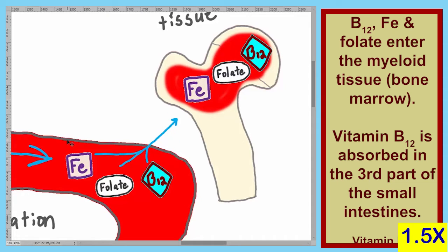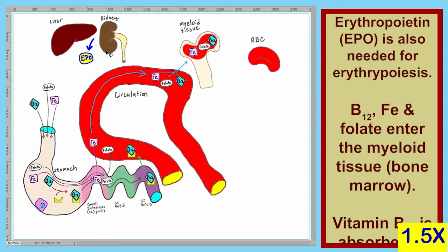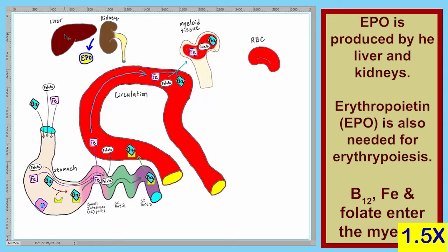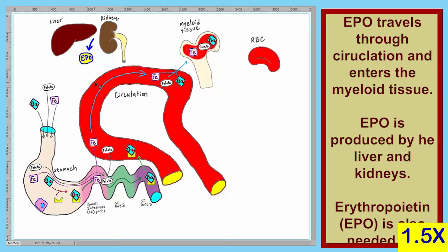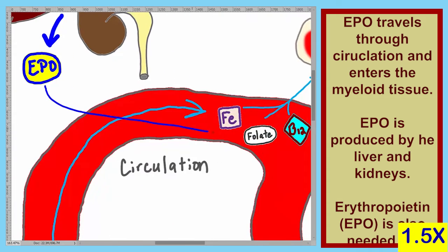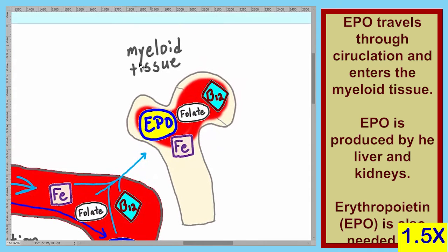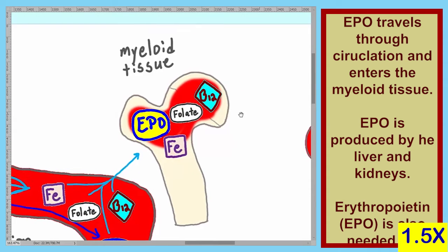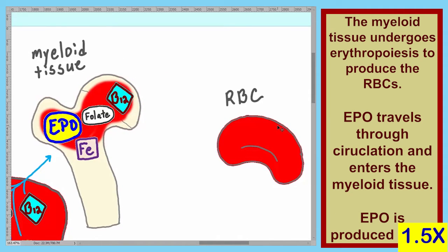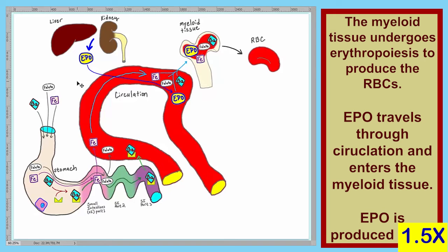Once in the bone marrow, these components are involved in erythropoiesis. One additional item needed for erythropoiesis is erythropoietin, or EPO. It is produced by the liver and kidneys. Once produced, the EPO enters circulation and moves to the bone marrow. Within the myeloid tissue we have all the required components — EPO, folate, iron, and vitamin B12 — which undergo erythropoiesis to produce our red blood cells.